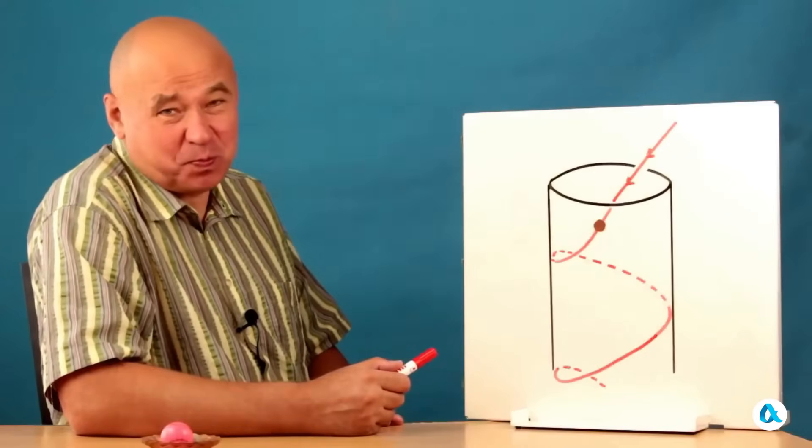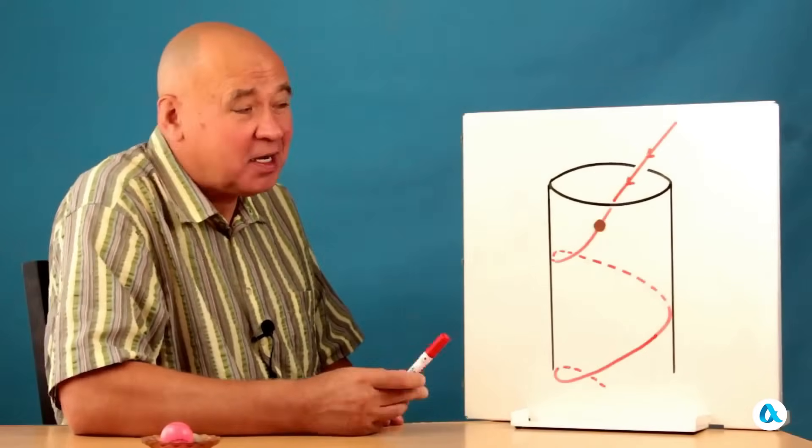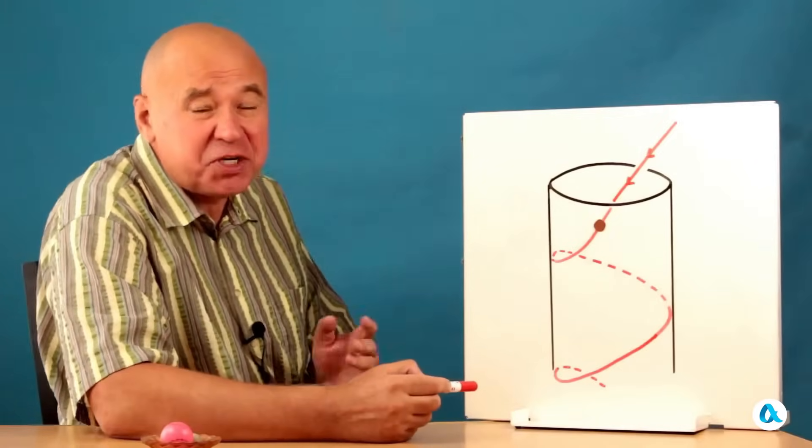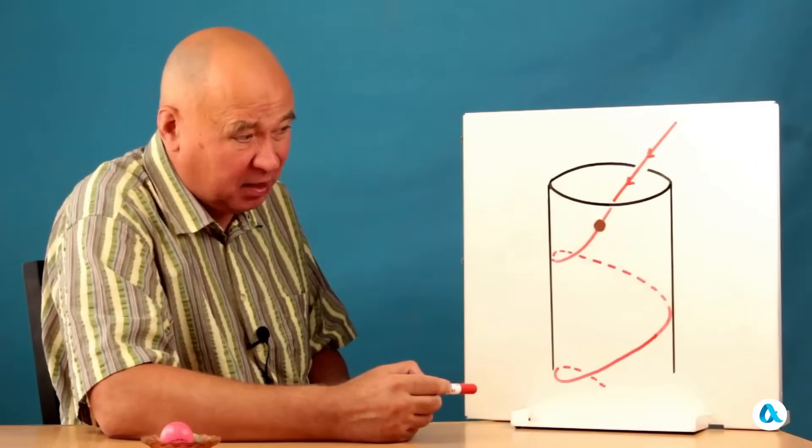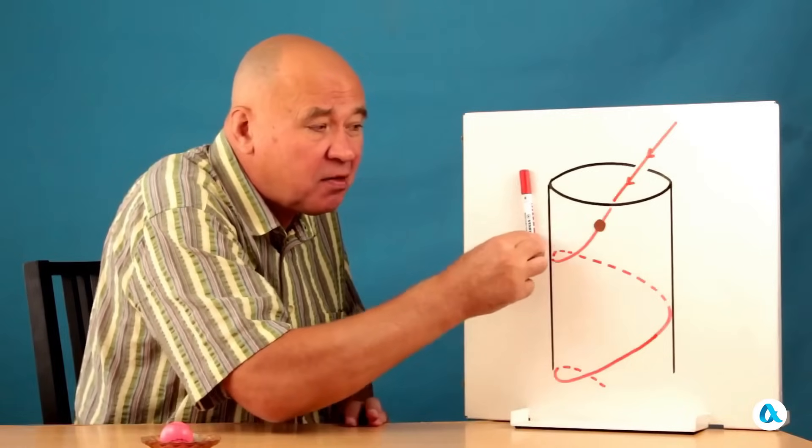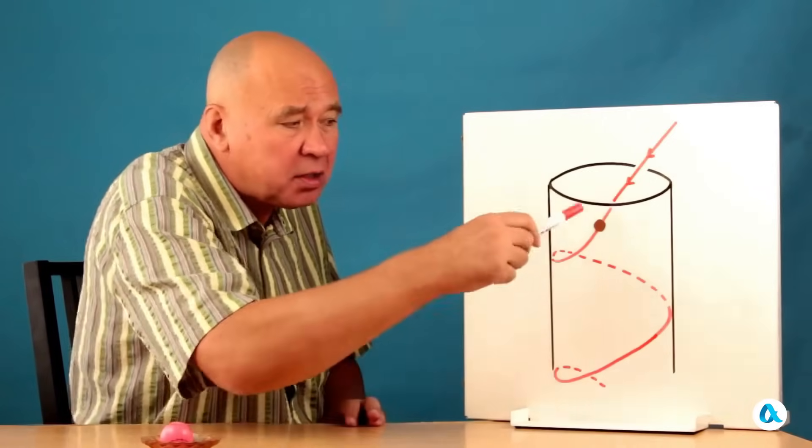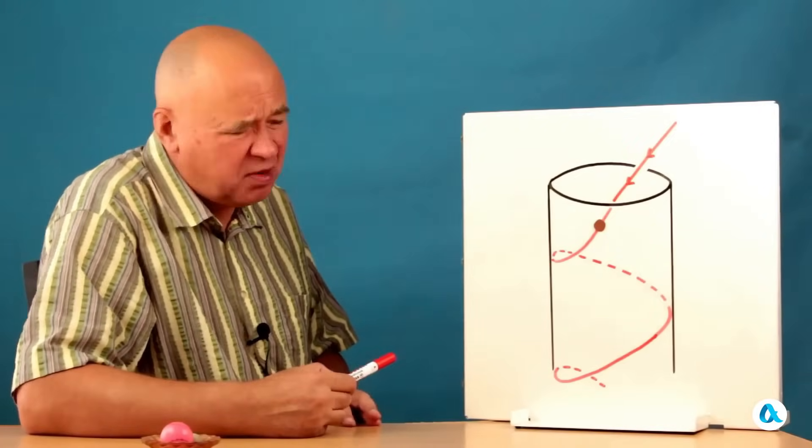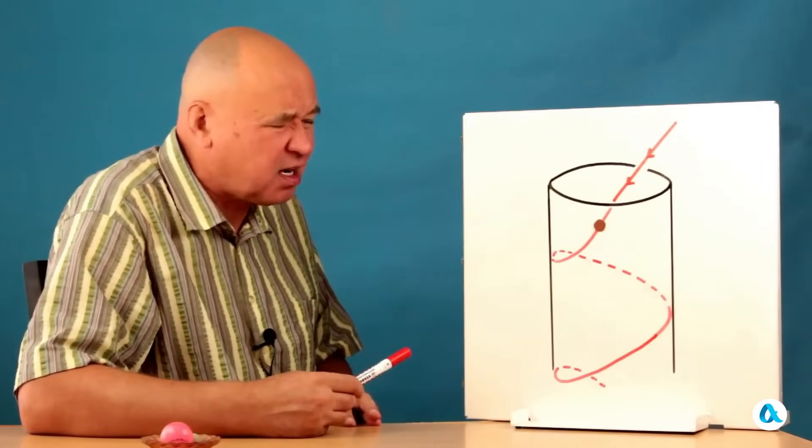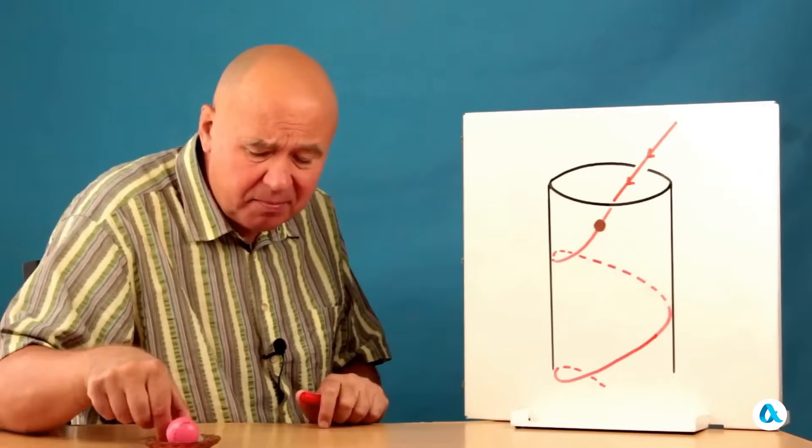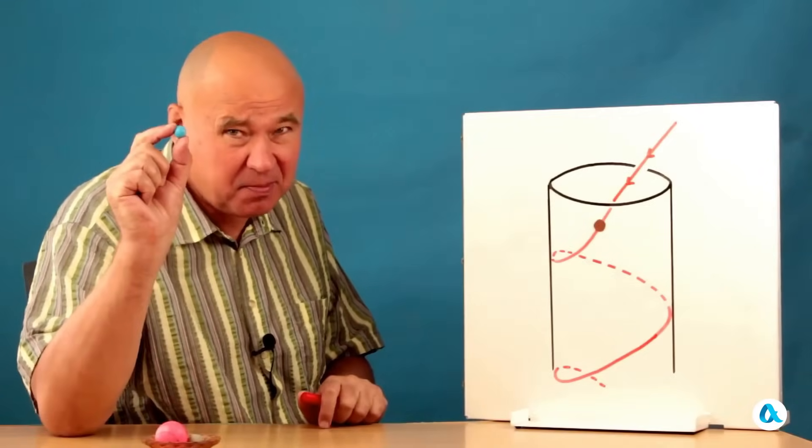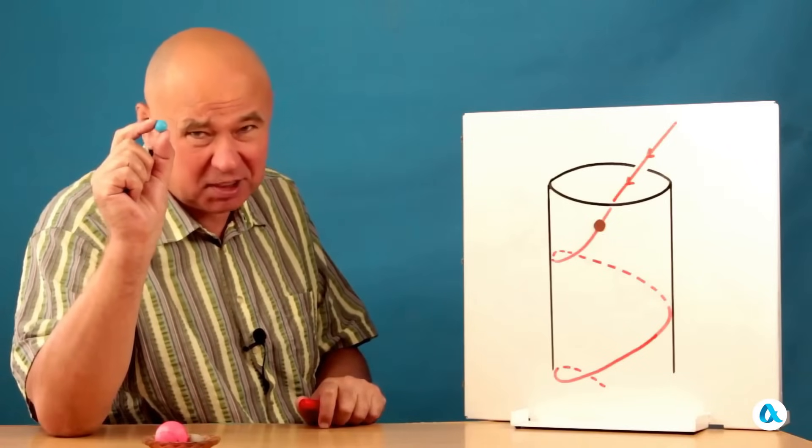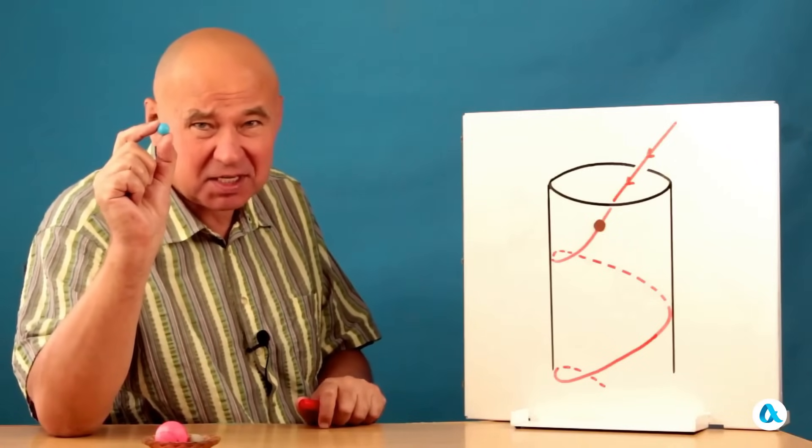I'll start with a simple limiting case, when a ball flies into the cylinder tangentially, with absolutely no friction against the walls. It's clear that since there are no forces that could stop it in that direction, it will continue to move along the cylinder in a spiral. And it doesn't matter whether the cylinder is positioned vertically or horizontally. We saw this precisely with the example of this plastic ball, which had very little friction with the walls of the cylinder.